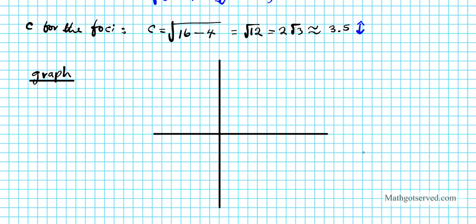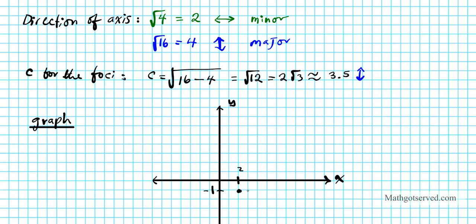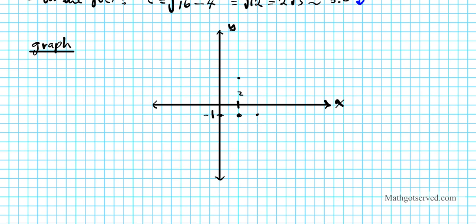Let's label the axes. This is the y-axis and this is the x-axis. The center is (2, -1), so starting from the origin, go 2 right and 1 down. From the center, we go 2 units side to side for the minor axis — there's minor vertex 1 and minor vertex 2. Then we go 4 units up and 4 units down for the major axis points. These four points define the ellipse. Draw the ellipse as best you can — it's an oval shape.